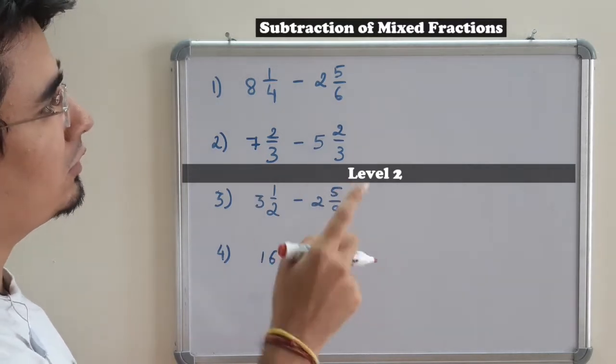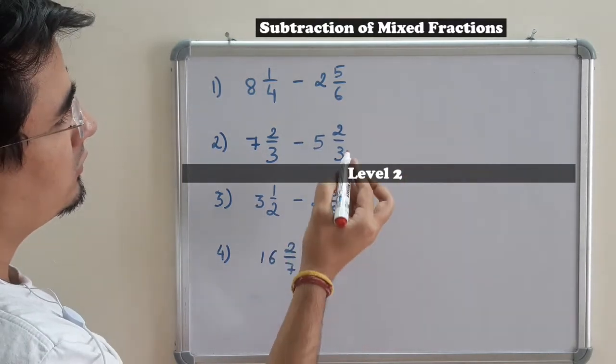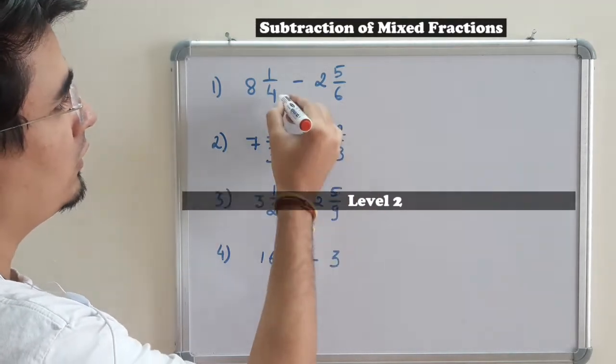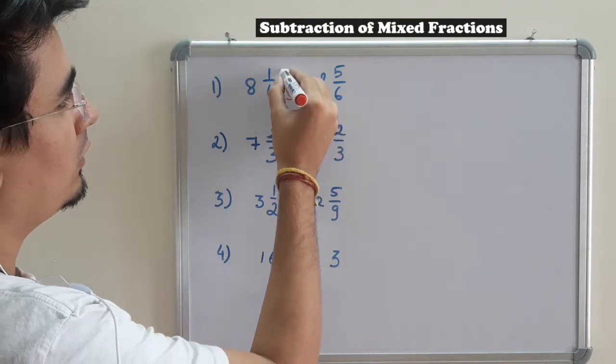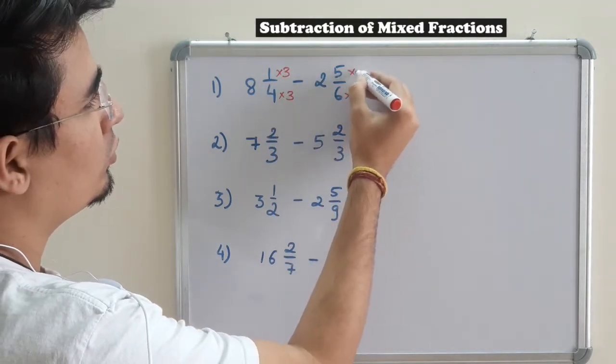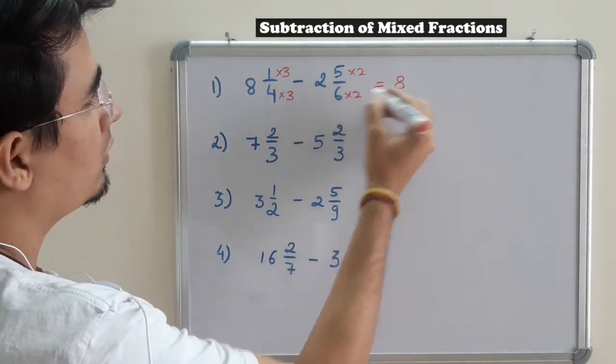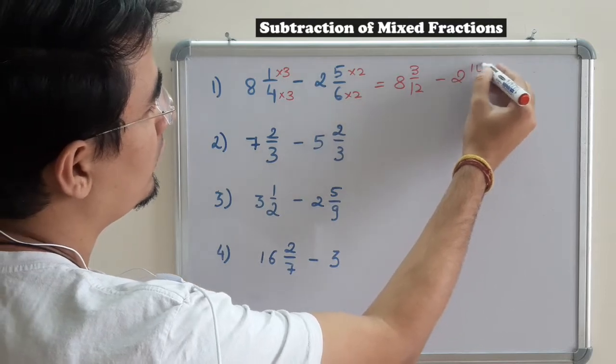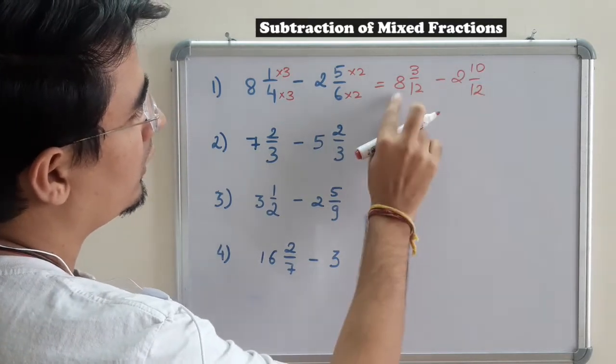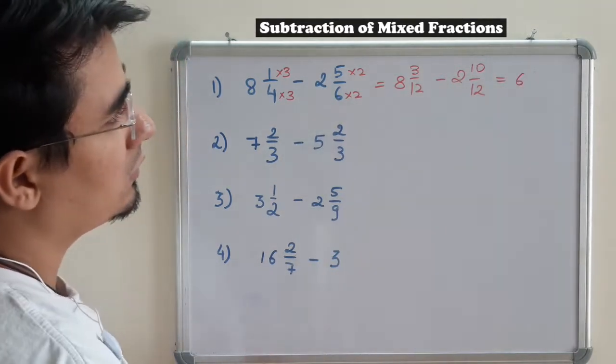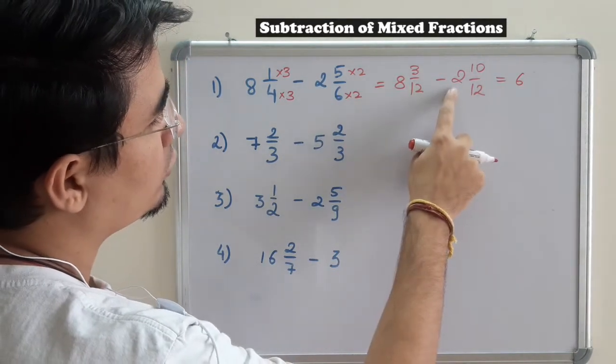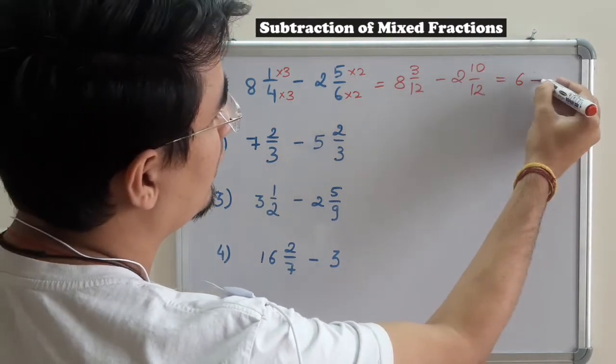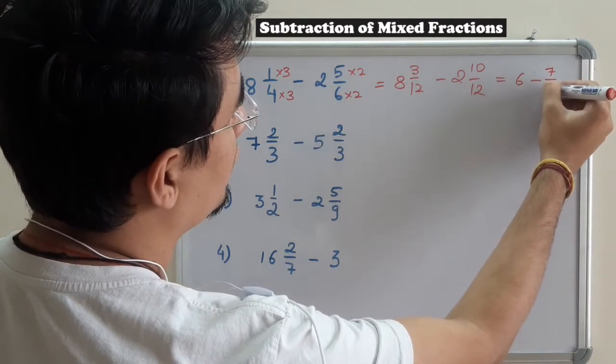I'll first show the direct method, then I'll explain it. The denominator is different, so I'll make the denominator the same. The LCM would be 12, so multiplying by 3, multiplying by 2, I'll be getting 8 3/12 minus 2 10/12. 8 minus 2 is 6, and 3 minus 10 is minus 7 upon 12.